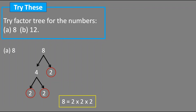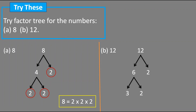Now let's draw the factor tree for 12. We write 12, draw two branches, and use 6 times 2 is 12. We could also use 4 times 3 and get the same answer. Since 6 is a composite number, we draw branches for 6: 3 times 2 is 6. All numbers are now prime, so the prime factorization of 12 is 2 into 2 into 3.